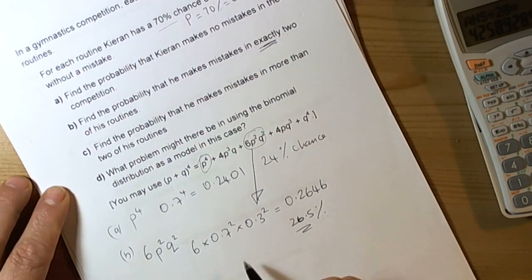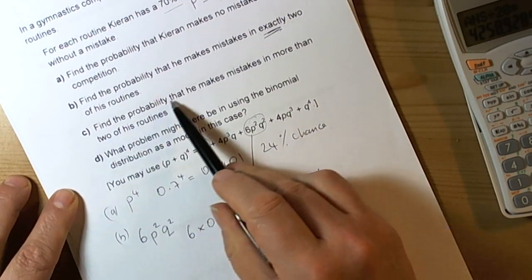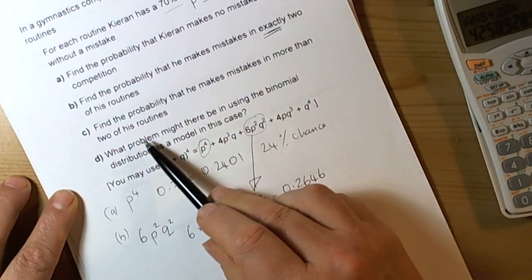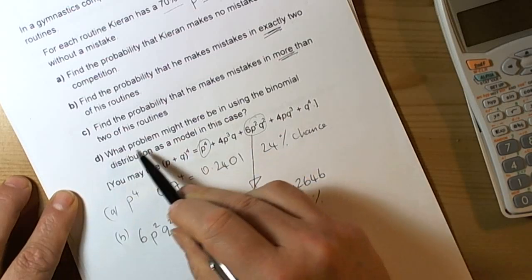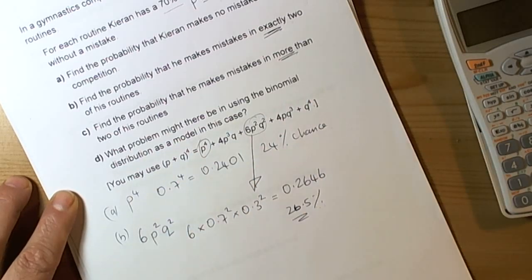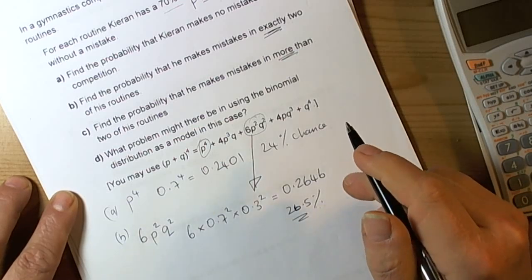Part C: find the probability that he makes a mistake in more than two of his routines. The key words are more than, so more than two. That really means he's made mistakes in three of his routines and he's made mistakes in four of his routines.